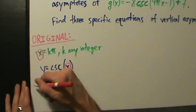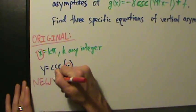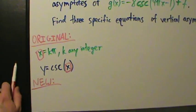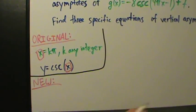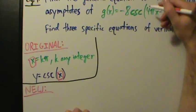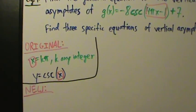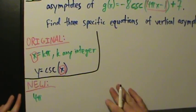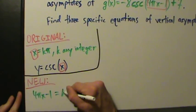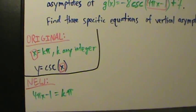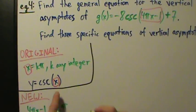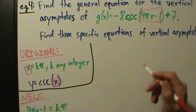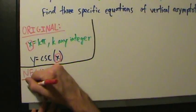So this is the original equation. For the new one, we take the entire expression inside the trig function - which is 4πx - 1 - and set it equal to kπ. So: 4πx - 1 = kπ. It's the exact same thing we've been doing: take the entire expression inside the trig function and set it equal to kπ.